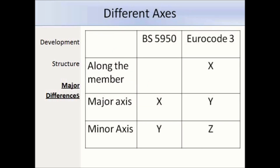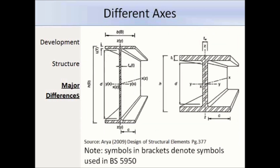First of all, the member axis. The system that Eurocode 3 uses is different to that used in BS 5950. The major axis in Eurocodes is the YY axis, which you would have known as the XX axis in BS 5950, and the minor axis is now the ZZ axis. The axes used in Eurocode 3 are consistent with those used in concrete and timber design. Here is a diagram showing the member axis — so YY you would have known as XX, and ZZ you would have known as YY. This is a major difference in the codes and something you should definitely be aware of.